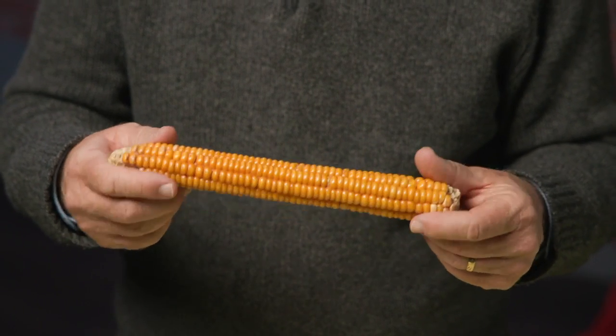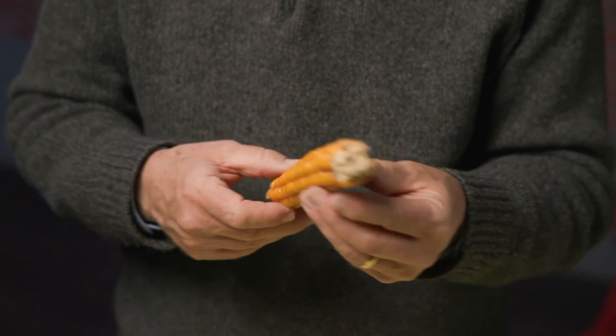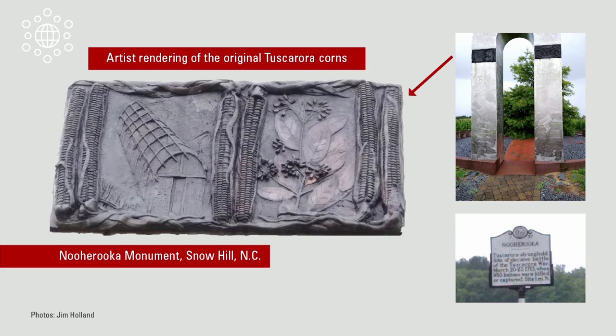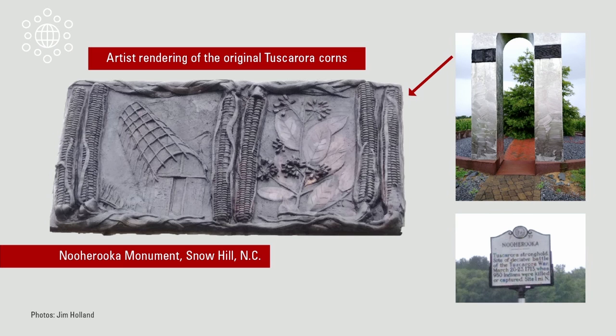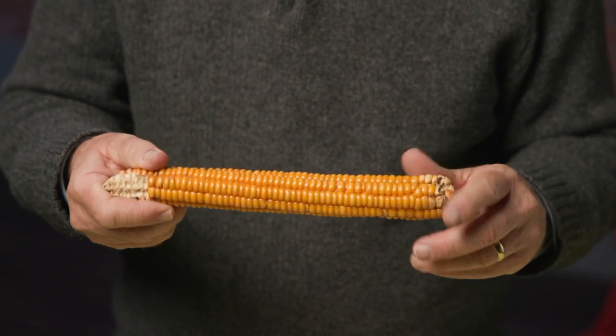An example of a variety still grown today is called Britain Flint. You can also see evidence of ancient corn in an artist's rendering of the original Tuscarora corns — the Tuscarora people who were in North Carolina before the arrival of Europeans. Pictures taken at the Nuhuruca Monument in Snow Hill, North Carolina show where the Tuscarora people lived. There was a battle between the English colonists and the Tuscarora people that resulted in a massacre and the group was pushed out of the region, but we still have evidence of the corns they grew.